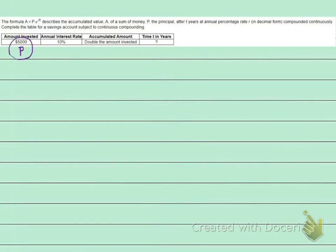P is $5,000. The interest rate is 10%, and remember when we use a percentage, we're going to use the decimal form, 0.10. The accumulated amount is double the amount invested. So it's 2 times the P, which is 2 times 5,000, which is 10,000.